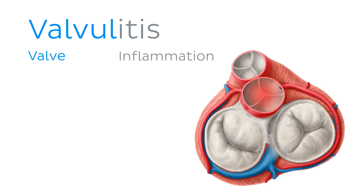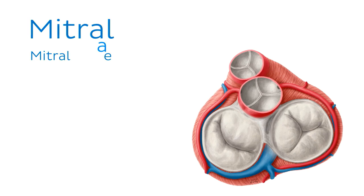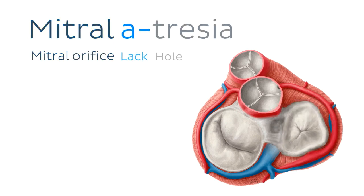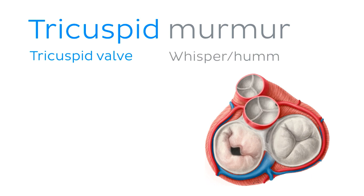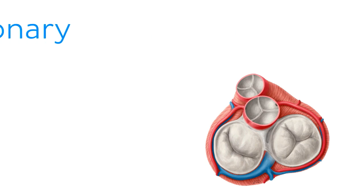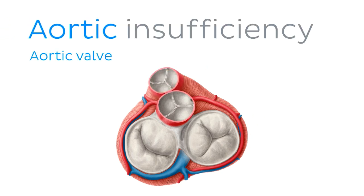There are several clinical terms which are often attached to the names of the cardiac valves and orifices to describe conditions affecting them. For example, mitral atresia refers to a condition describing the congenital absence, narrowing, or closure of the mitral orifice. A tricuspid murmur is a low noise caused by damage of the tricuspid valve. Pulmonary stenosis is a narrowing of the pulmonary orifice. Aortic insufficiency is an incomplete closure of the aortic valve, permitting regurgitation or backflow of blood.